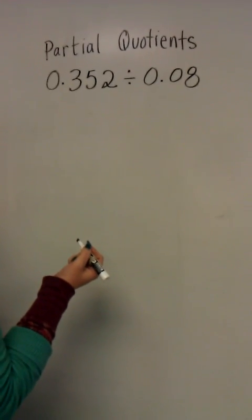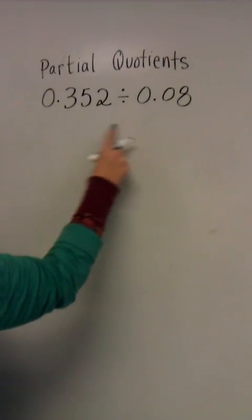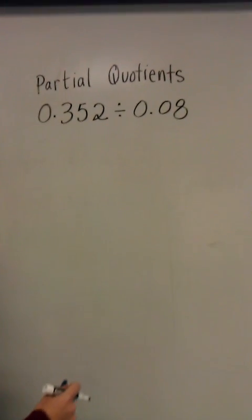I'm going to be solving this problem: 352 thousandths divided by 8 hundredths using the partial quotients method.